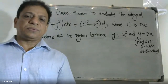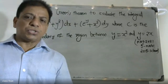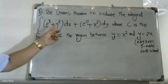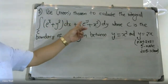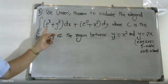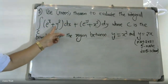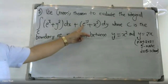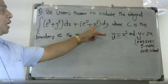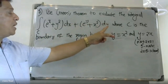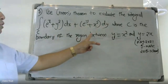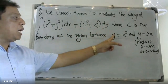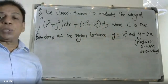Good morning students. The question is: use Green's theorem to evaluate the integral of C, e raised to x plus y squared dx plus e raised to y plus x squared dy, where C is the boundary of the region between y equal to x squared and y equal to x.